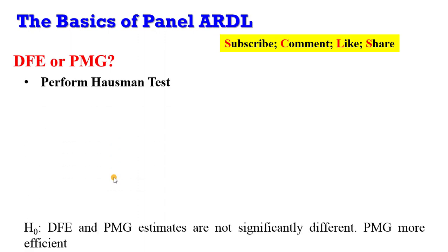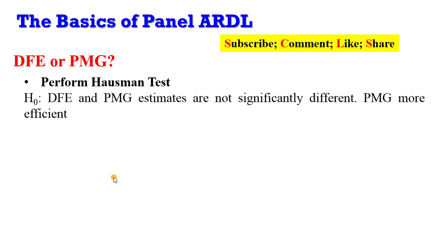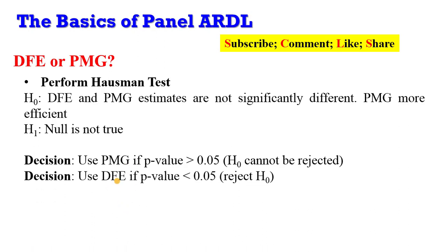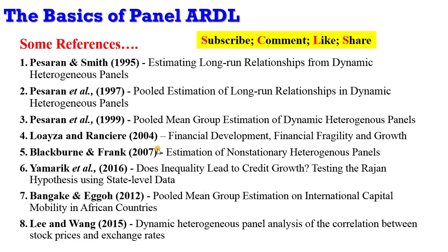To decide between DFE and PMG, perform the Hausman test. The null hypothesis is that DFE and PMG estimates are not significantly different, and under the null the PMG is more efficient. If the p-value is greater than 0.05, use the PMG estimator. If the p-value is lower than 0.05, reject the null in favor of the DFE estimator.